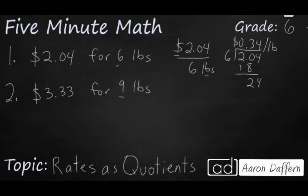Let's see what we have for $3.33. So $3.33 divided by nine pounds. So we'll do the same thing. We're paying more, but we're getting more. Question is, are we getting it at a cheaper rate? So nine goes into 33 almost four times, but not quite.